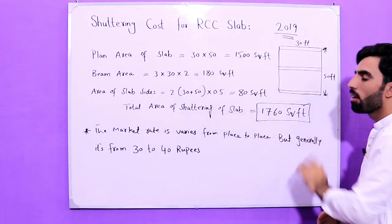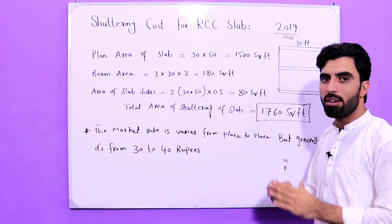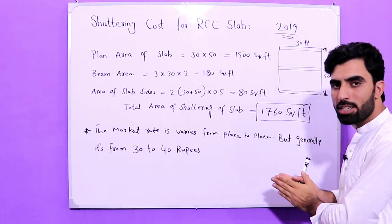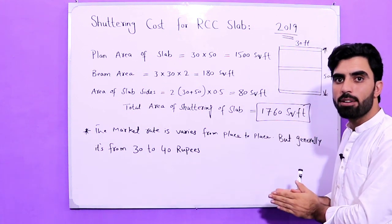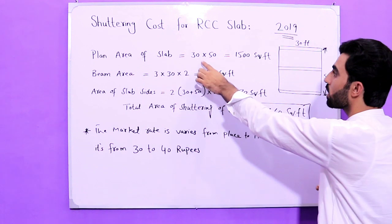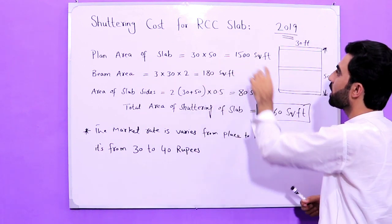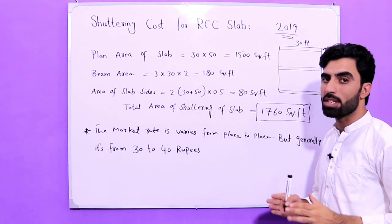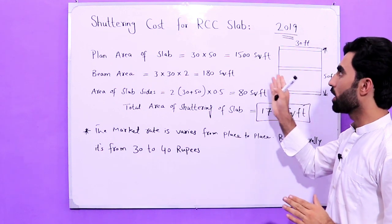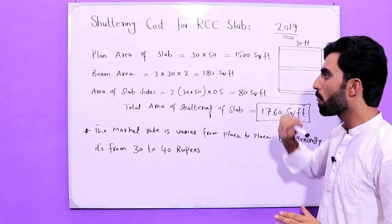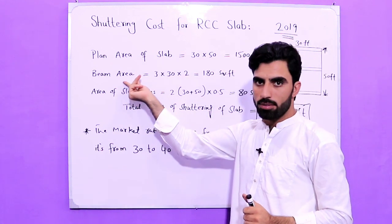The plain area of the slab is 30 by 50 feet as you can see. So to find its area: length multiplied by width — 30 multiplied by 50 — gives us 1,500 square feet. That is the area of shuttering for the RCC slab.